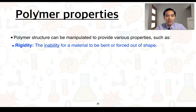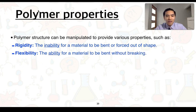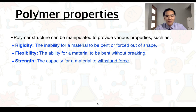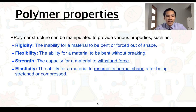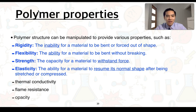Rigidity is the inability for a material to be bent or forced out of shape. A contrasting property is flexibility, essentially the opposite of rigidity. We have strength — the capacity for a material to withstand force — and elasticity, the ability for a material to resume its normal shape after being stretched or compressed. A few other properties of note are thermal conductivity, flame resistance, and opacity, or the relative clearness of the object itself.